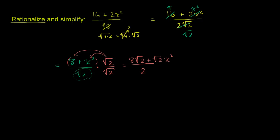We can consider this done — we have simplified the expression. Or if you want, you could break it up. You could say this is the same thing as 8 square roots of 2 over 2, which is 4 square roots of 2, plus square root of 2 times x squared over 2, so plus square root of 2 over 2 times x squared. Depending on your tastes, you might view one form as more simple than the other, but both are equally valid.